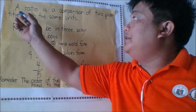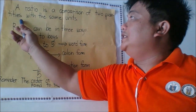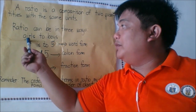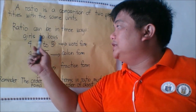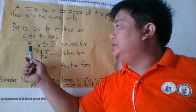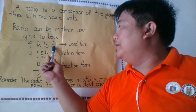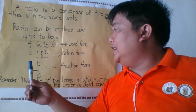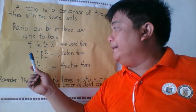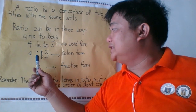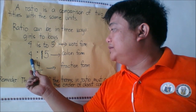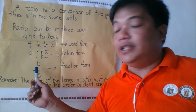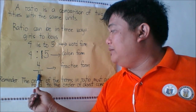What is a ratio? A ratio is a comparison of two quantities with the same units. A ratio can be written in three ways. For example, girls to boys — there are four girls and five boys. We can write the ratio as four is to five, which is the word form using the word 'is to'. We can also write it using the colon, so four colon five, which is called the colon form.